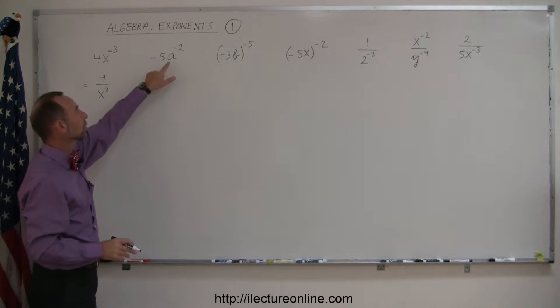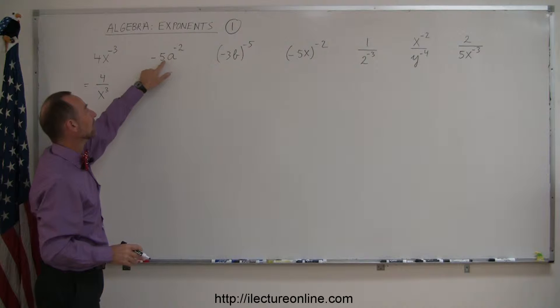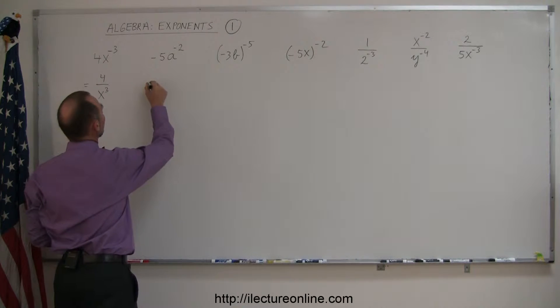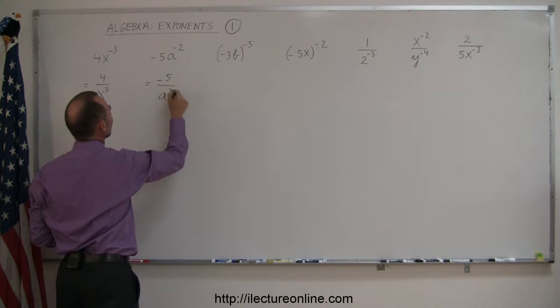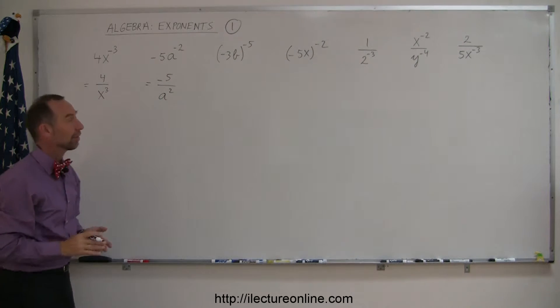Here, same thing, this only applies to the a, not to the 5, and not to the negative, so this can be written as minus 5, which stays in the numerator, divided by a to the positive 2 power. So that's how we simplify that one.